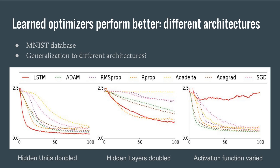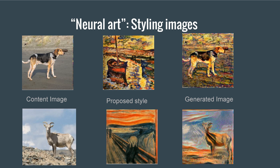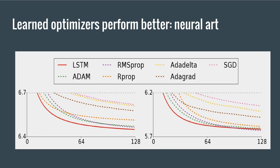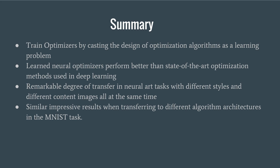However, changing the activation function inhibits generalization of the learned optimizer to different architectures. With the term 'neural art,' the authors explain the transfer of an artistic style to an image using convolutional networks. Each style of image leads to a different optimization problem. The LSTM optimizer outperforms all standard optimizers if the resolution and style image are the same as those it was trained on. Moreover, it continues to perform very well when both the resolution and style are changed at test time.